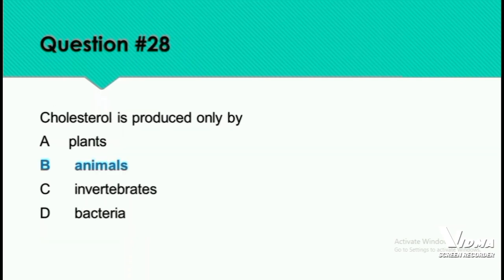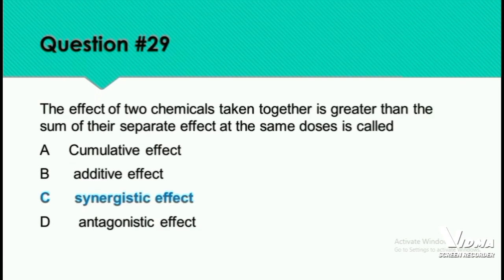Question 28: Cholesterol is produced only by animals. Option B is the right answer. Question 29: The effect of two chemicals taken together that is greater than the sum of their separate effects is called the synergistic effect — option C.